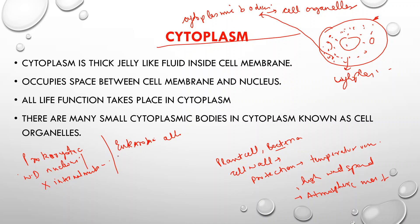Eukaryotic cells are much larger and more complex than prokaryotic cells. If asked which cell is bigger, eukaryotic cells are bigger than prokaryotic cells, and their structure is more complex. These cells contain a membrane-bound nucleus and DNA.